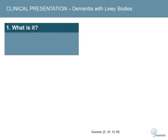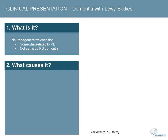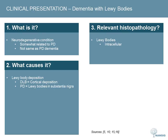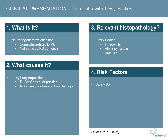Dementia with Lewy bodies is a neurodegenerative condition somewhat related to Parkinson's disease, but it is a distinct entity and the two conditions are managed differently. Both are caused by deposition of Lewy bodies in the brain. In Lewy body dementia, they are deposited in the cerebral cortex; in Parkinson's disease, they are concentrated in the substantia nigra. Lewy bodies are intracellular aggregations of abnormal proteins, specifically alpha-synuclein and ubiquitin. As with other dementias, it is more common over the age of 65, and patients often have no family history of the condition.